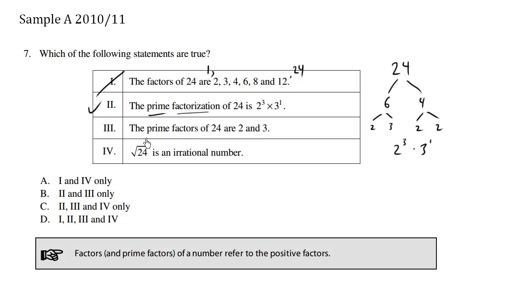Number 3. The prime factors of 24 are 2 and 3. So the prime factors, when you factor out the number, it's all the bases. So we have a base 2 and we have a base 3. So indeed, the prime factors are 2 and 3.